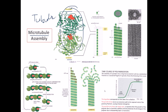Beta tubulin is the most important monomer among alpha and beta tubulin, because beta tubulin can attach with ATP or ADP. If beta tubulin is attached with ATP, that means it is active. If it is attached with ADP, that means it is inactive in nature.